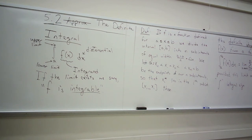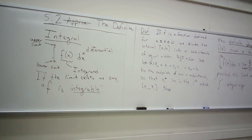If this limit doesn't exist, we say the function is not integrable. Do you know of any functions where this limit won't exist? Functions with vertical asymptotes are good examples — pick any such function and check whether that limit gives a definite number.